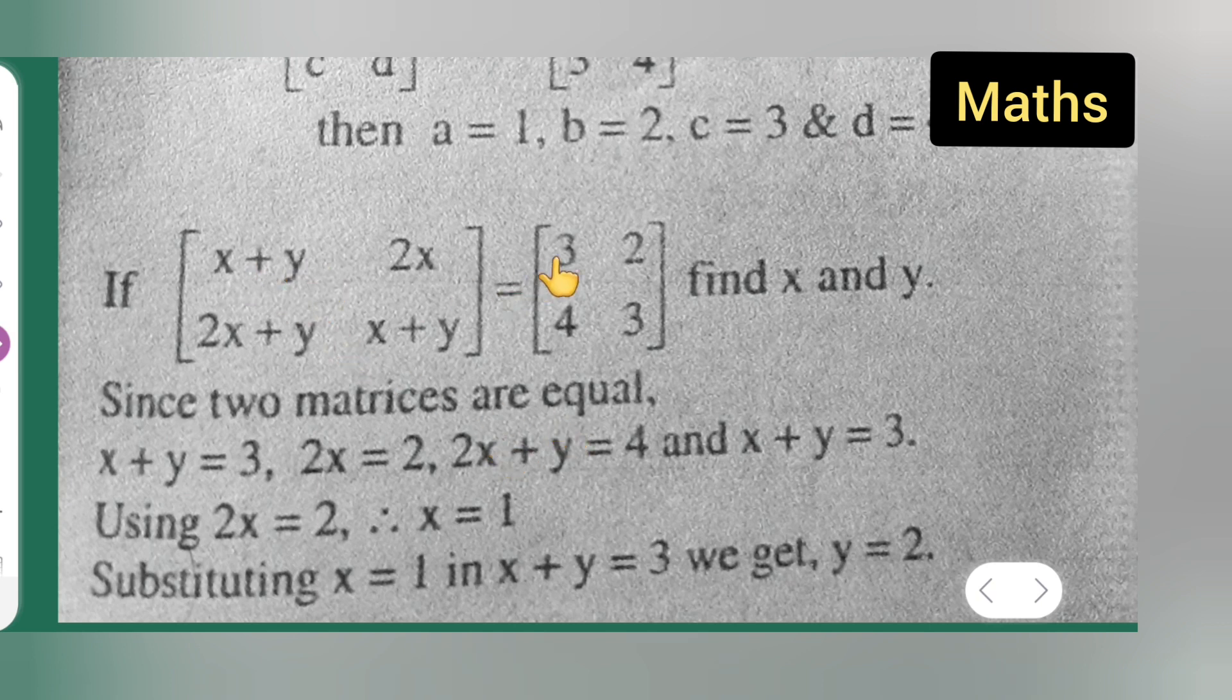Since two matrices are equal, what I'll have to do is x plus y is equal to 3. Next, 2x is equal to 2, 2x plus y is equal to 4, and x plus y is equal to 3.